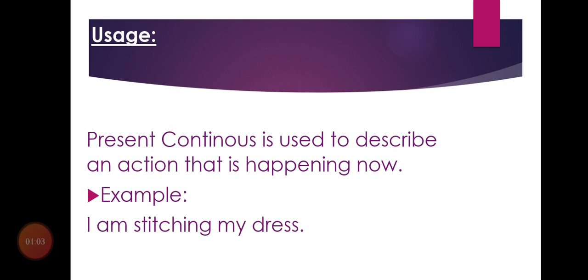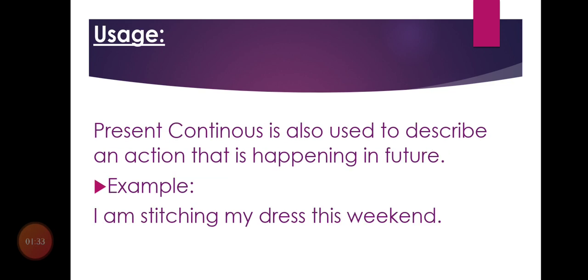Present continuous is used to describe an action that is happening right now. Continuous means something is going on in flow, something is happening right now — we are talking about the present. For example, 'I am stitching my dress' — if someone asks what you are doing now, you can say 'I am stitching my dress.'